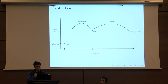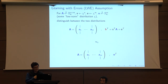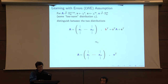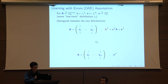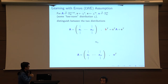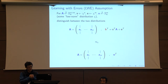We work with Learning With Errors (LWE). For a uniformly generated matrix A, and randomly sampled vectors s and e from a low-norm error distribution, LWE states that the following two distributions are indistinguishable: in the first, the adversary gets matrix A and the noisy vector s·A + e; in the second, the adversary gets A and a uniformly sampled vector u. LWE states these two distributions are indistinguishable.